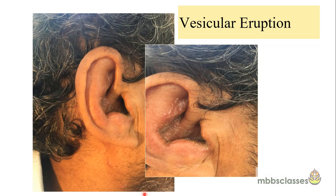In serological examination in Ramsay-Hunt sine herpete, there will be a rise in the antibody to the varicella zoster virus. Here is a picture of one case of Ramsay-Hunt syndrome. We can see vesicles on the right side of the ear — the area involved is the concha. In the close-up view, there are vesicles in the concha, and also certain vesicles on the post-auricular area.